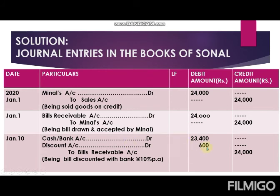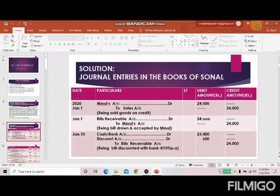Now pass the entry. Write discount amount 600 in front of Discount account. Cash received = 24,000 minus 600 = 23,400. So: Cash or Bank account debit 23,400; Discount account debit 600; to Bills Receivable account 24,000. Next entries we will see in the next video.